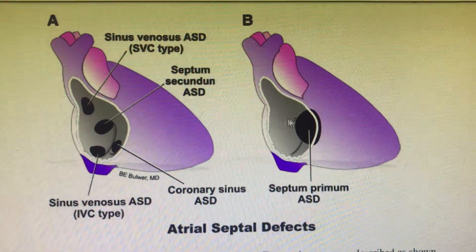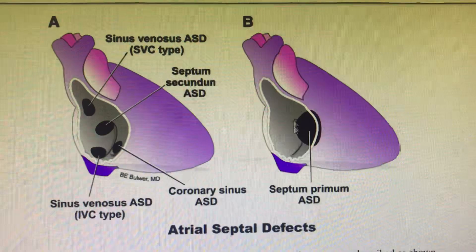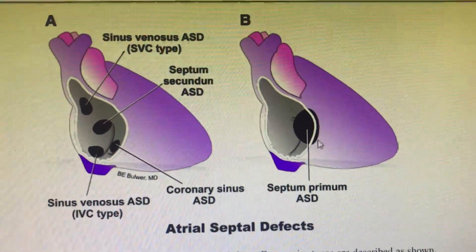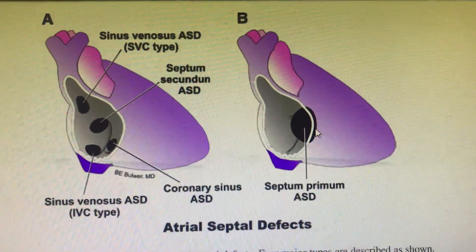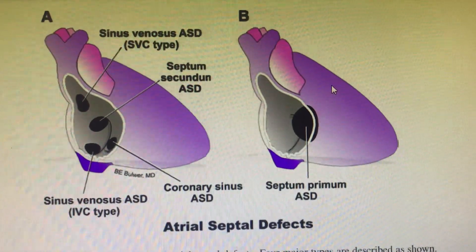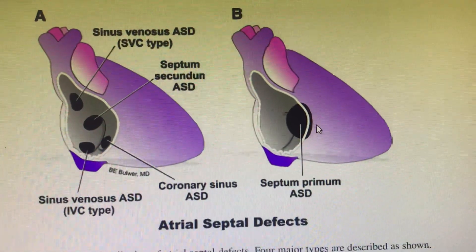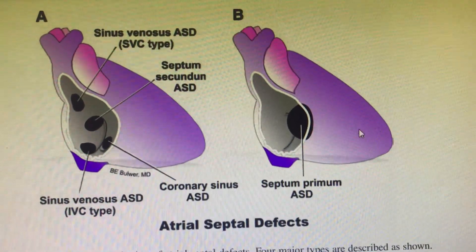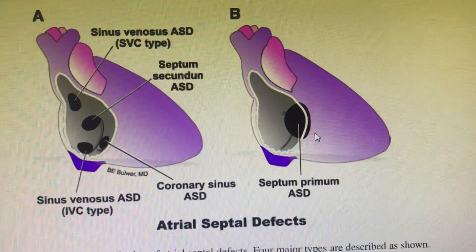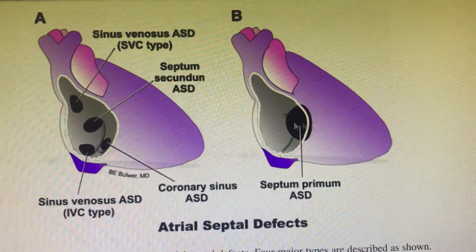The next commonly seen is the septum primum ASD. This is because of the foramen primum, where the septum primum has to fuse to the ventricular septum. If the fusion doesn't happen, it forms the septum primum ASD. Most of the time it will be seen as a T-shaped ventricular septum — the tricuspid annulus and mitral annulus will be at the same level, with the lower end of the T formed by the ventricular septum. It is also seen with partial or complete AV canal defects.